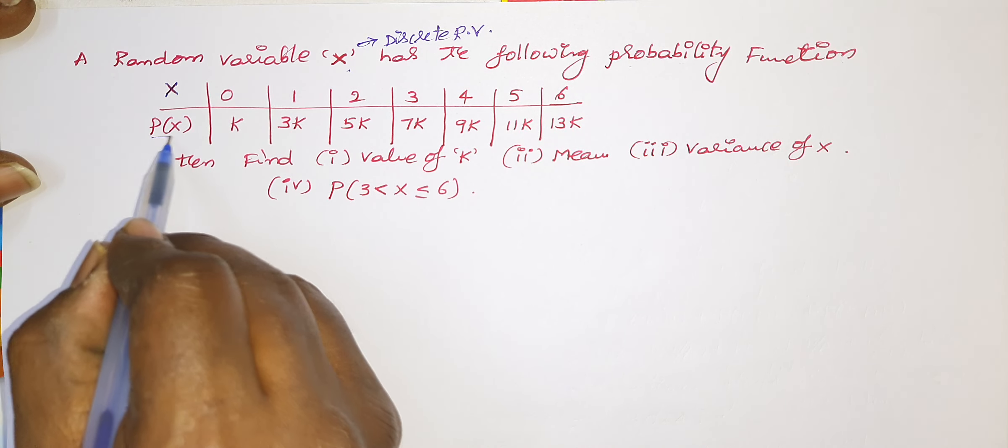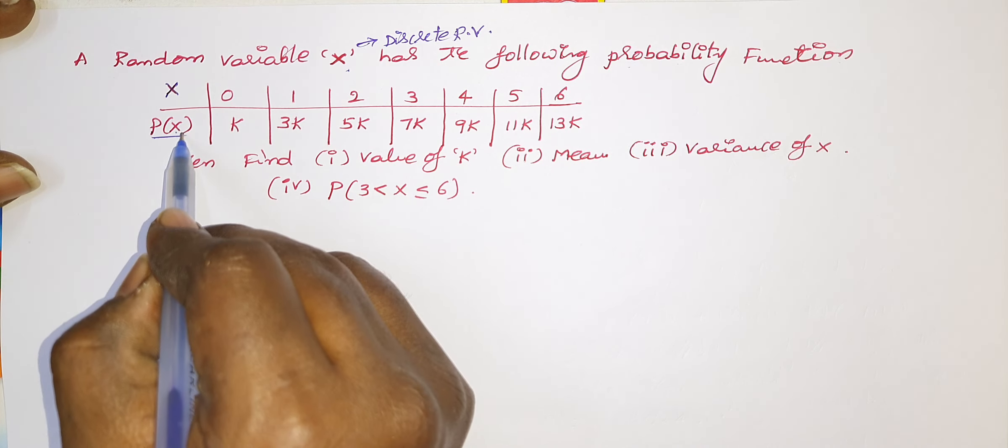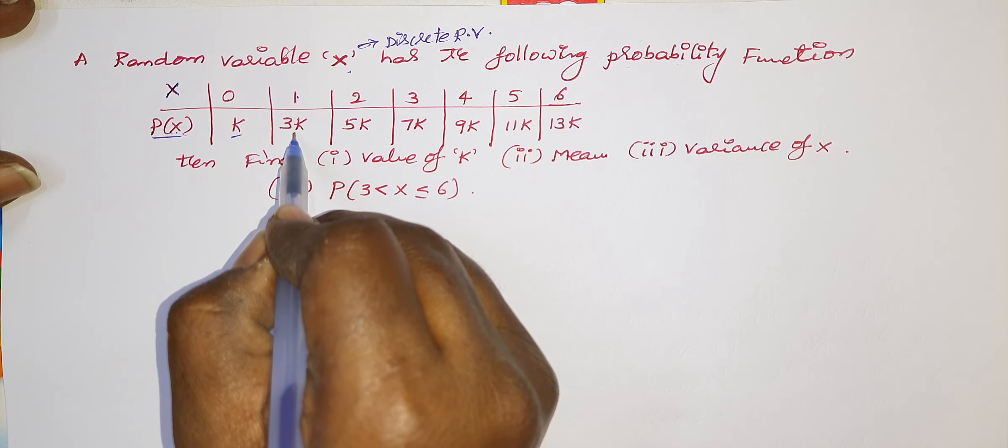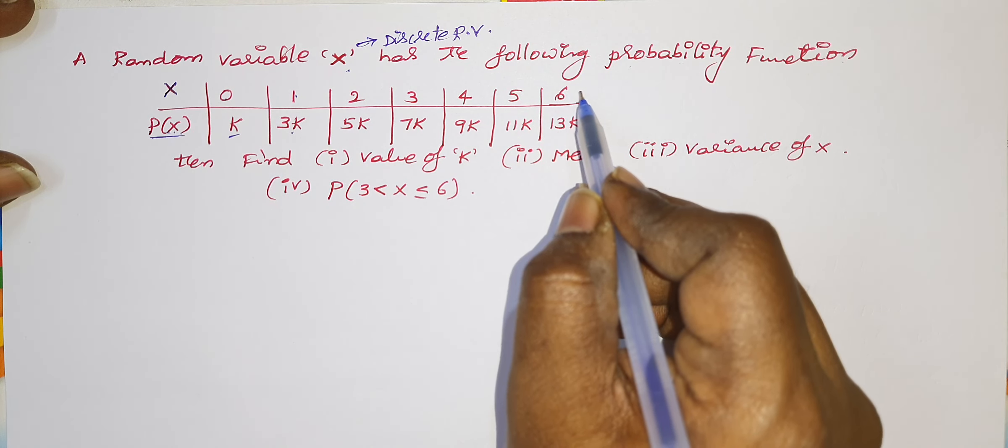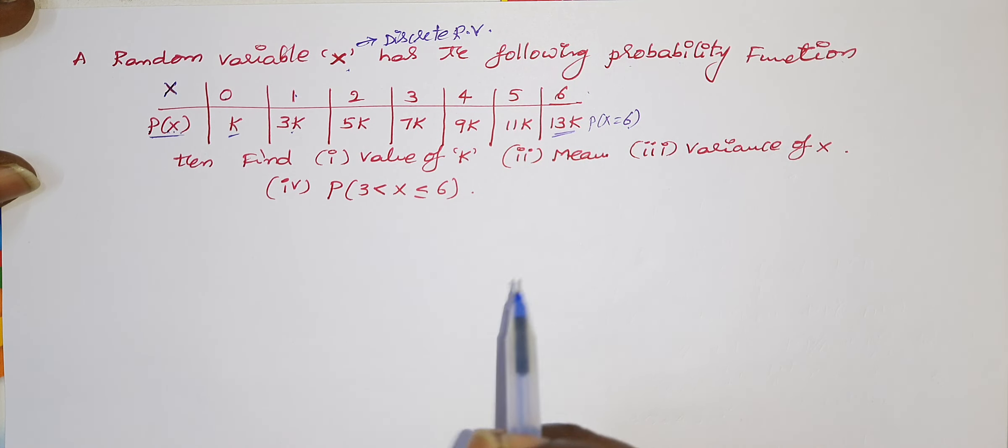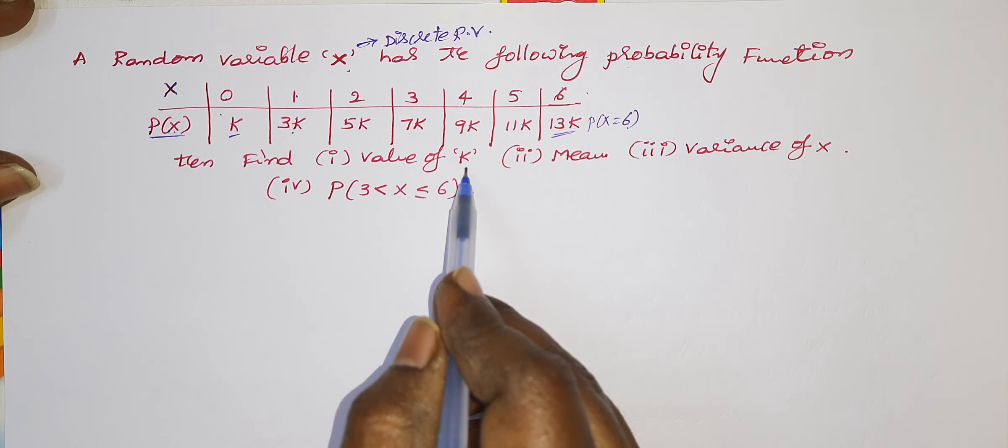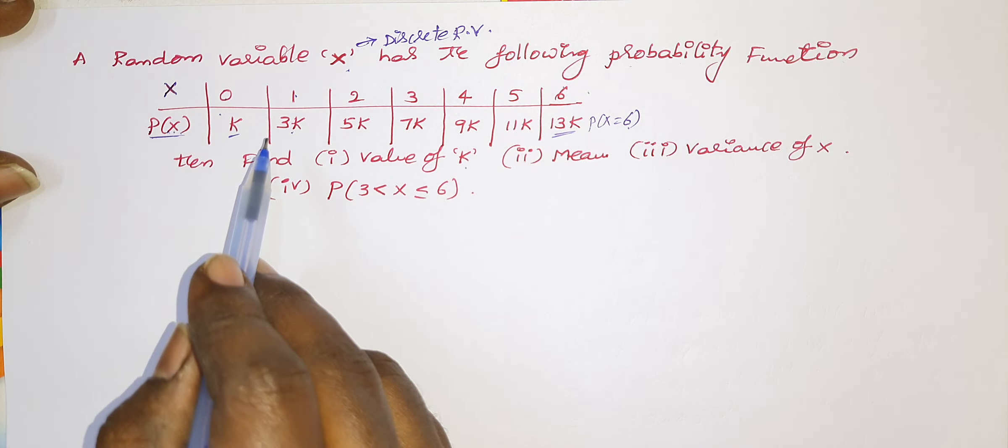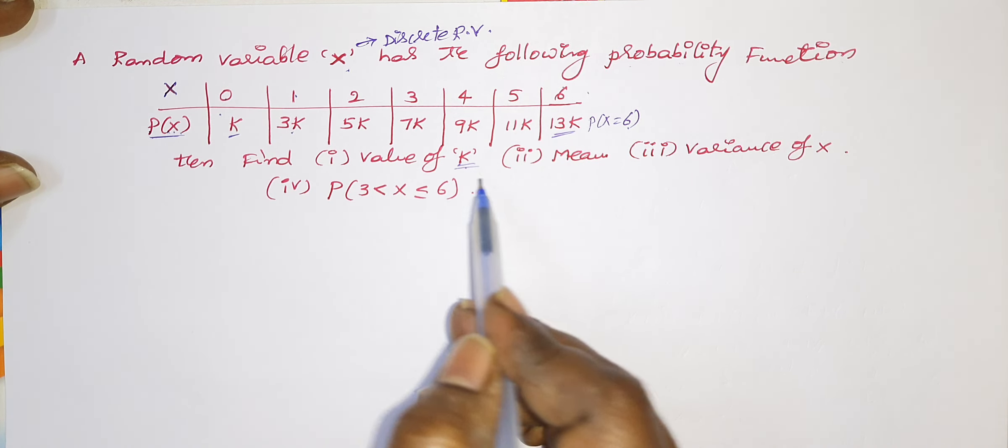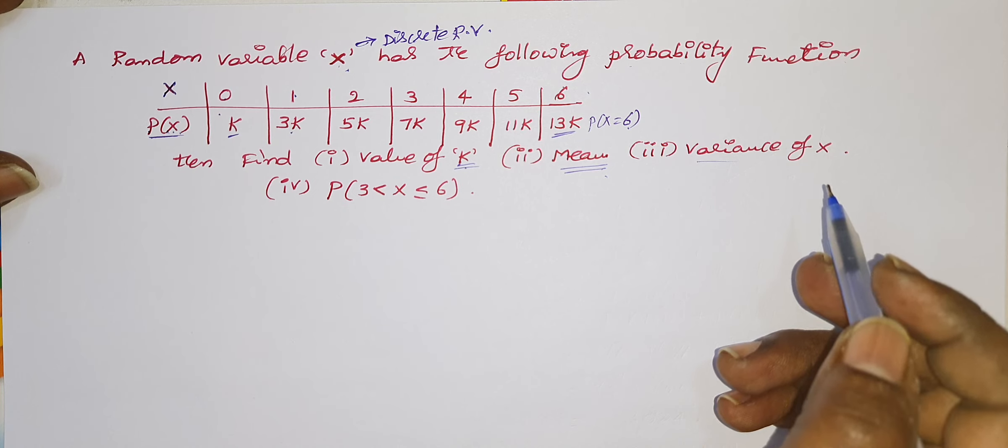See here, what is this in the second row? Probability, P is nothing but probability of x values. What is the probability of x equals 0? It is k. What is the probability that x value is 1? 3k. In similar way, what is the probability of x equals 6? This is 13k. x values are given here and respective probabilities are given to you here.